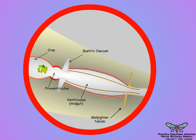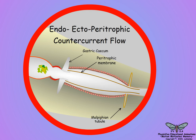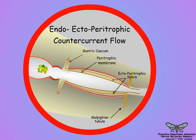To maximize nutrient absorption in the mid-gut, insects may use an endo-ecto-paratrophic countercurrent flow of digesting foods and fluid through the mid-gut. The driving force for the countercurrent flow is likely fluid flowing forward from the malpigian tubules through the ecto-paratrophic space and actively reabsorbed by the gastric ceca.